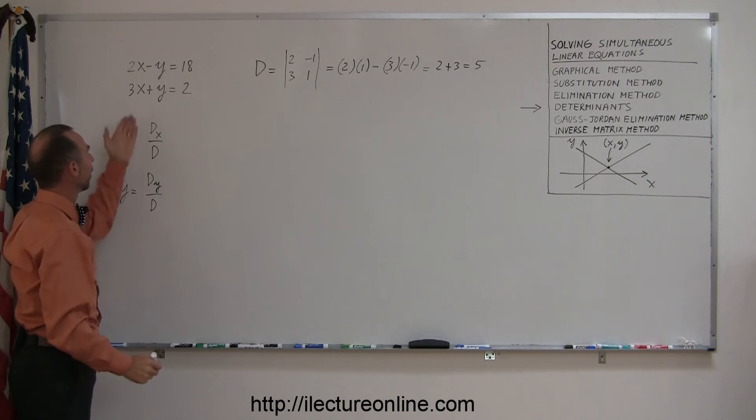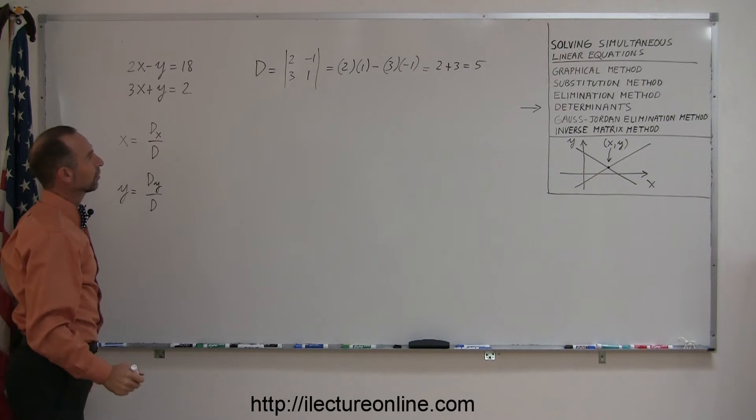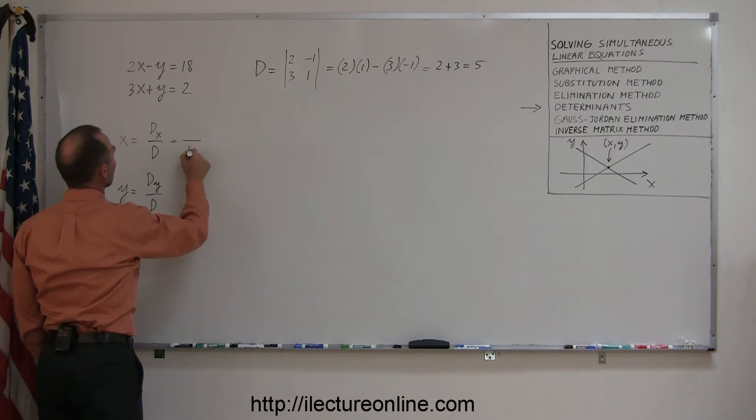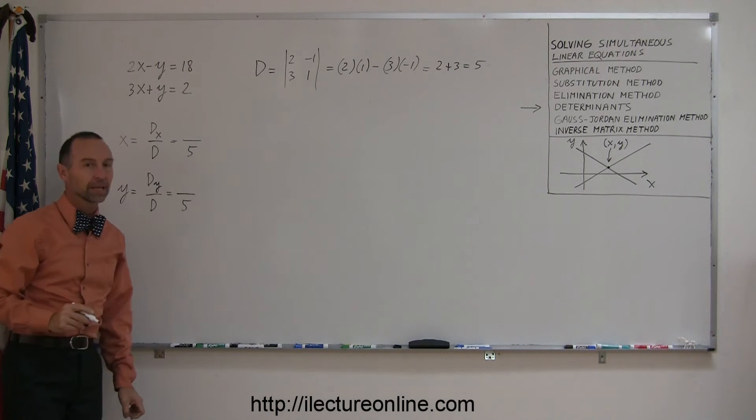Which means the determinant of this particular set of linear equations is 5. That means that the denominator here will be a 5, and the denominator here will be a 5.